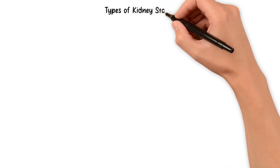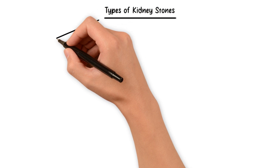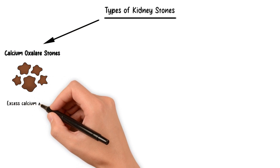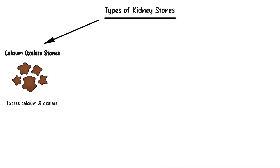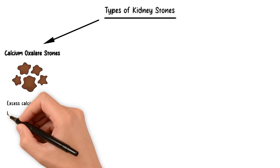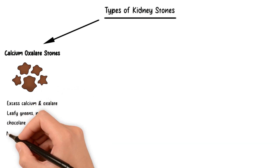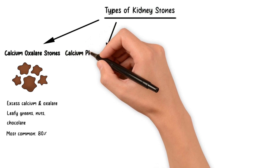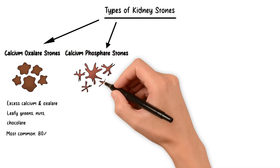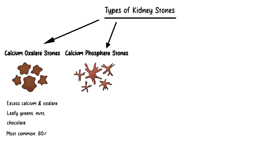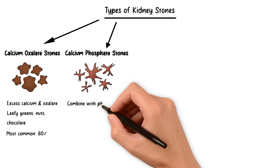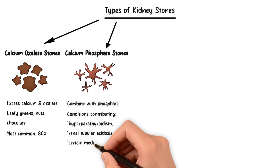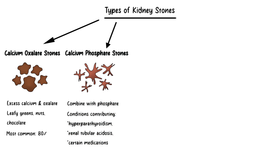Let's explore the five main types of kidney stones. The most common type is calcium oxalate stones, which form when there is an excess of calcium and oxalate in the urine. Oxalate is a naturally occurring substance found in many foods including leafy greens, nuts, and chocolate. This type accounts for about 80% of all kidney stones. Next, we have calcium phosphate stones — also related to high levels of calcium in the urine, but combining with phosphate instead. Conditions such as hyperparathyroidism, renal tubular acidosis, and even some medications can contribute to their formation.